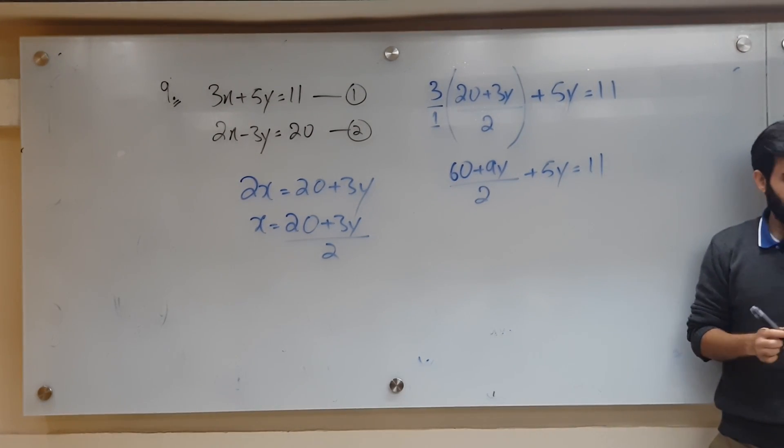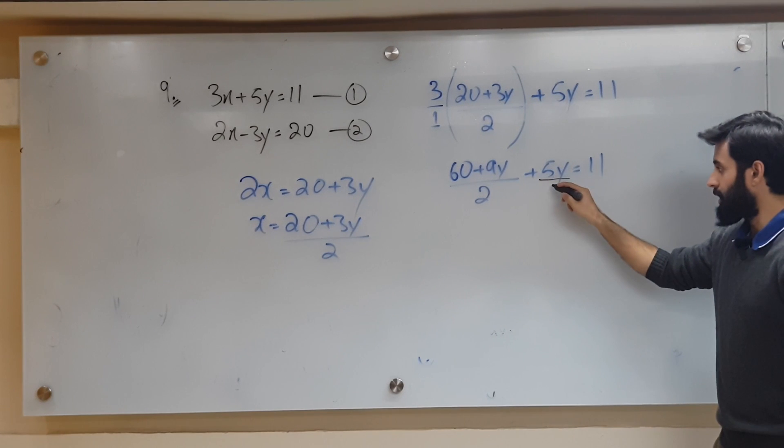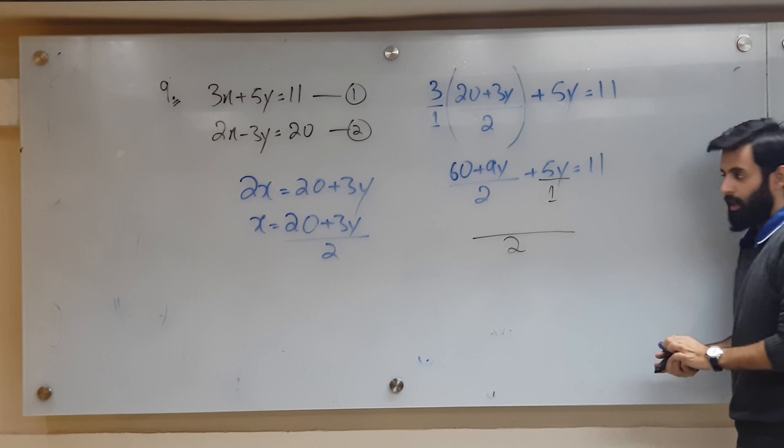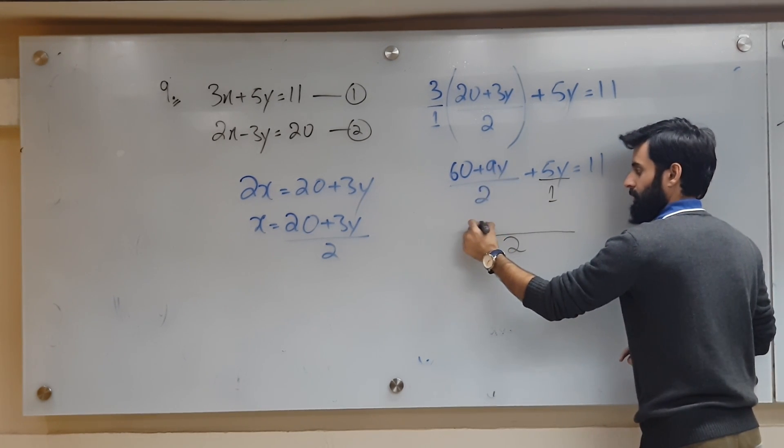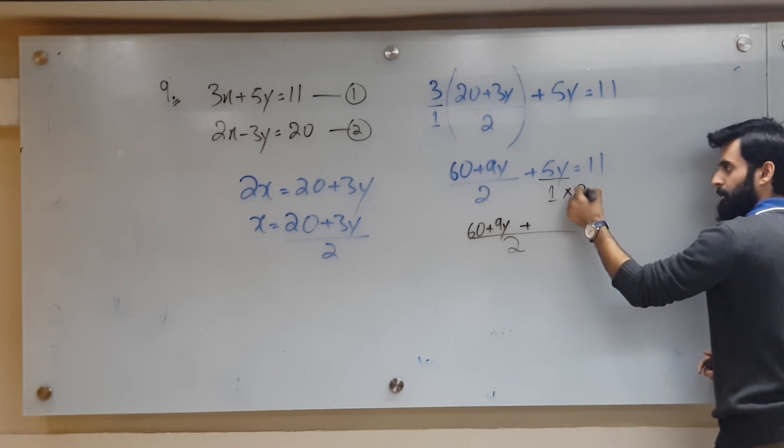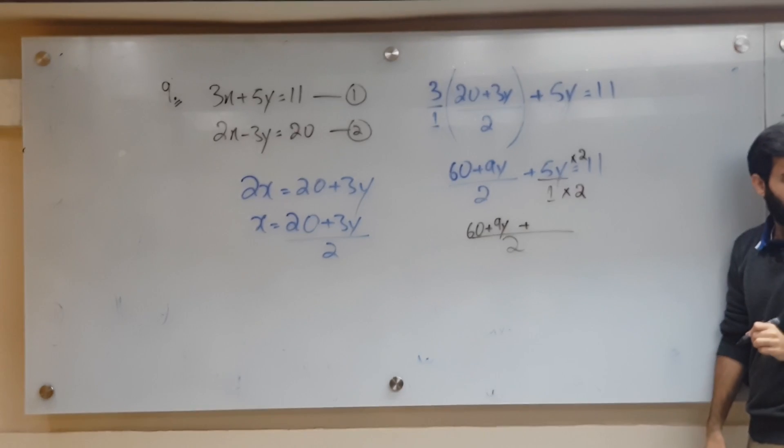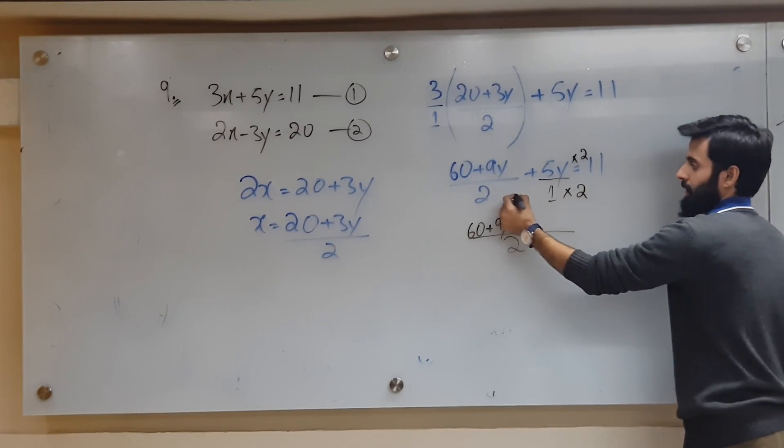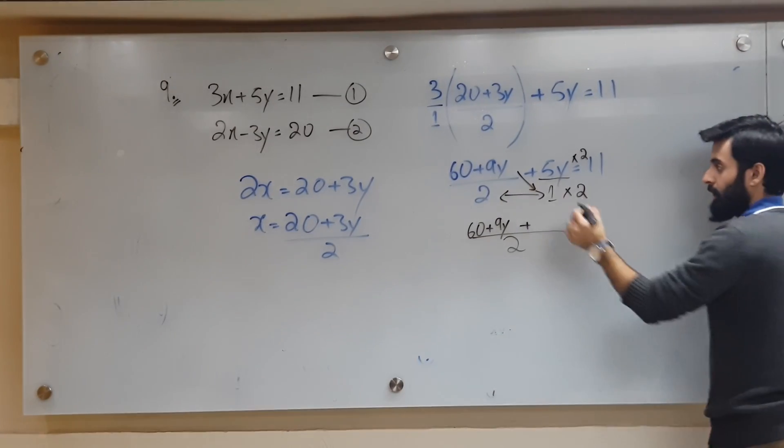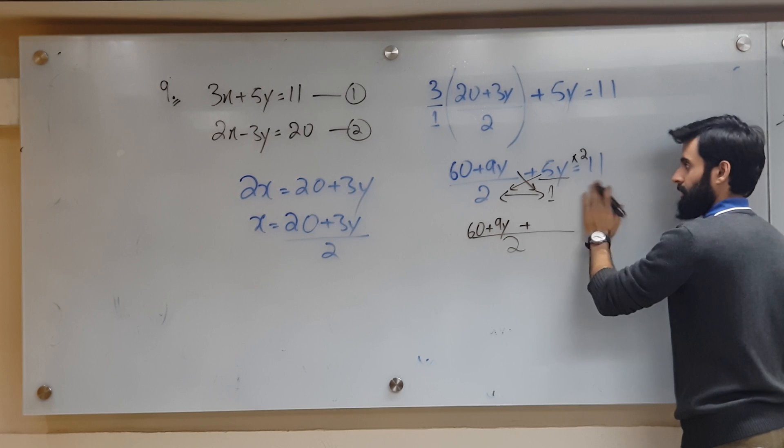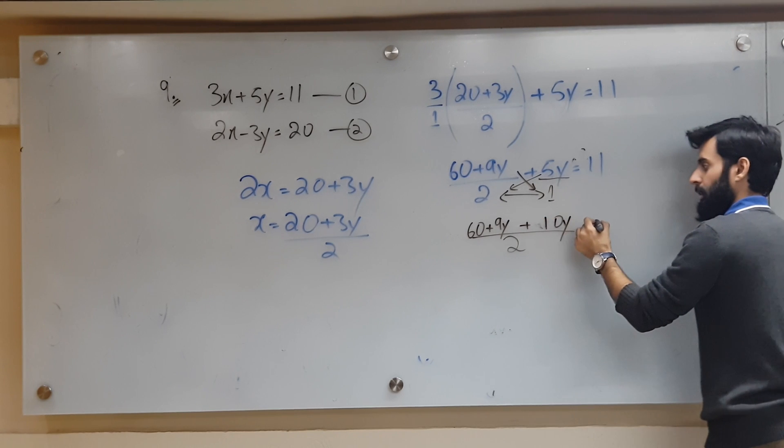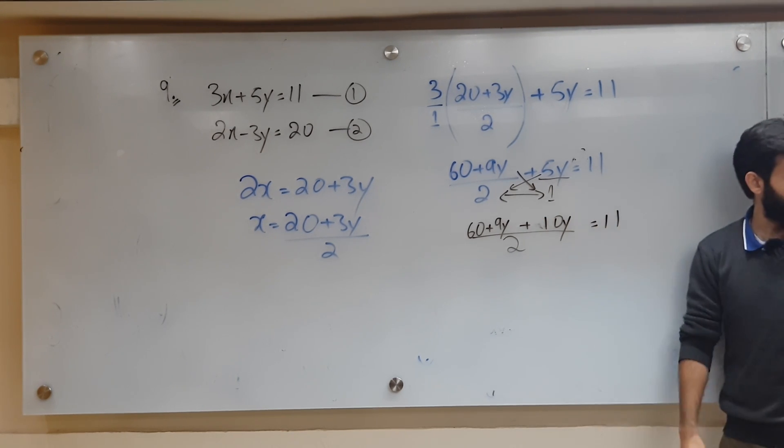What can we do now? How about I take out the LCM? What will LCM be? 2. This will stay as it is, 60 plus 9y as it is, plus 5y into 2, which will be 10y, equals to 11 into 2, which is 22. So 60 plus 9y plus 10y equals to 22. Any questions so far?